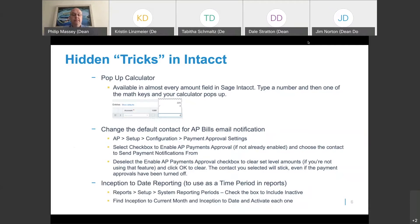There's a roundabout way to do it: in the AP configuration, there's an option for payment approval settings. You may not even have that turned on. What you do is turn it on, then choose the contact or email you want these notifications sent from. After you choose that, you go and deselect that functionality — disable it — go through the prompts, and it'll still keep that person's email. So when you go to pay bills, the notification doesn't have to come from the person physically working through that process. And there's also the ability to do inception-to-date reporting, which you can activate in your system reporting period settings.